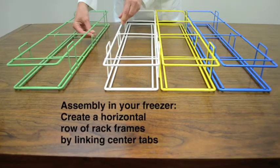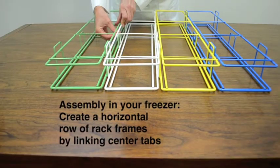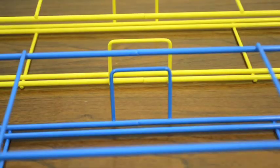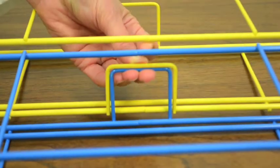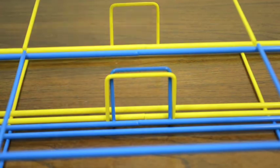To create a horizontal row of racks, position rack frames side by side and lift the wide center tab of one over the narrow center tab of the other to lock together.